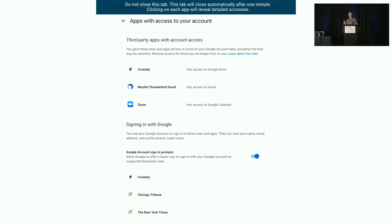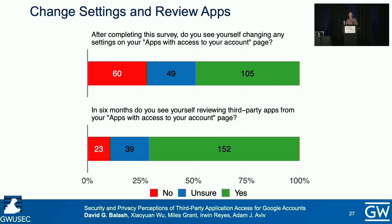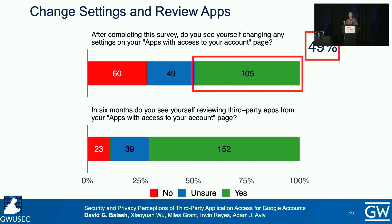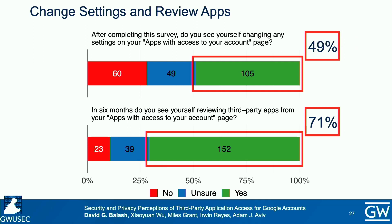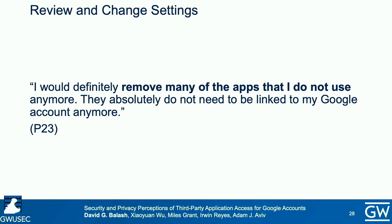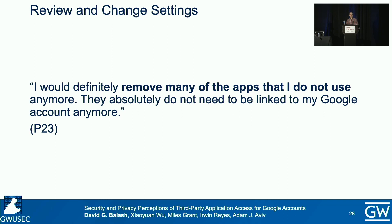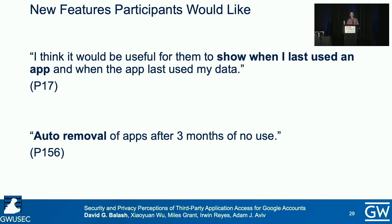When taking the second survey, we had participants interact with their own Apps with Access to Your Account page. Almost half reported that they would change their settings after completing the survey, and 71% reported that they would review third-party apps in six months. When asked what they would change or review, common response themes included removing account access from unused apps and changing specific permission access. Participant 23 said: 'I would definitely remove many of the apps I do not use anymore. They absolutely do not need to be linked to my Google account anymore.'